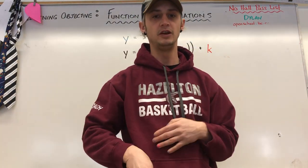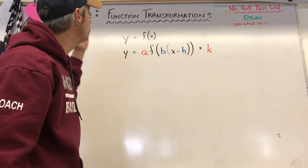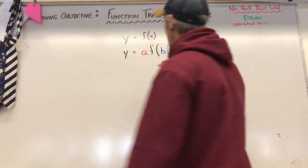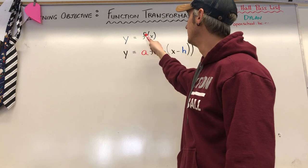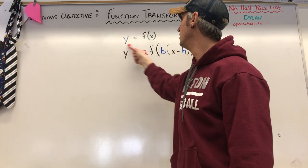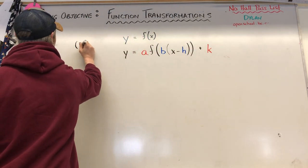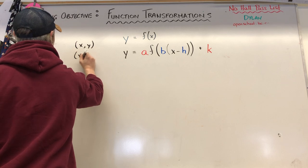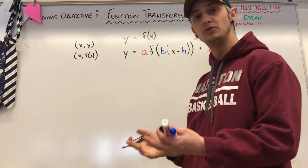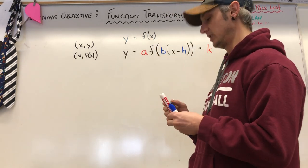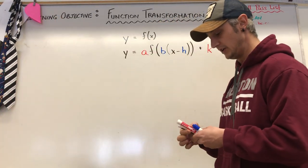Here we are talking about function transformations. We know y is the same thing as f of x — y is a function of x. We can rewrite coordinates as (x, f(x)) because y and f of x are the same thing. In both cases, x is the input variable, and y or f of x is what gets pumped out.